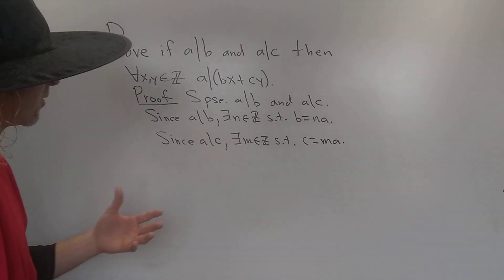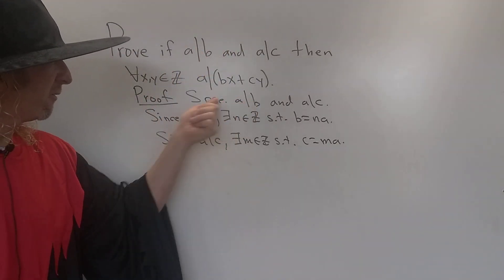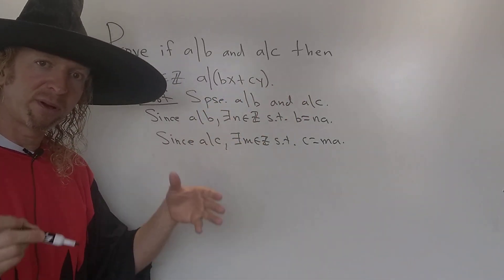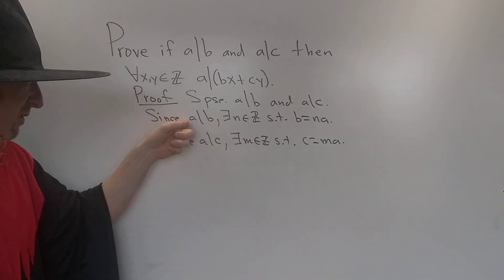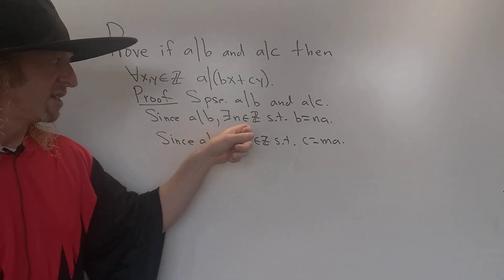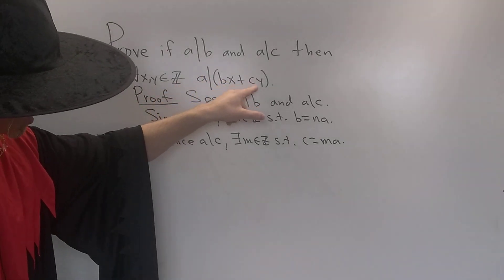Good stuff. Okay, so all we've done so far is write down our assumption. And then I carefully rewrote it again. So I wrote the assumption down together, and then I broke up each individual statement. So since a divides b, b is a multiple of a. Since a divides c, c is a multiple of a. Now we have to show that bx plus cy is a multiple of a.